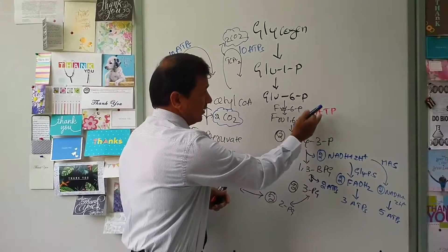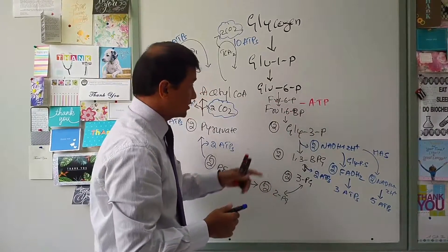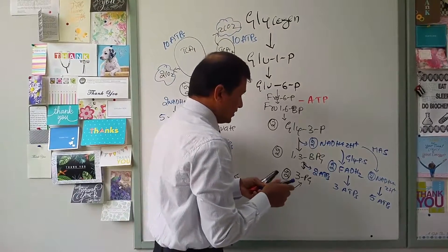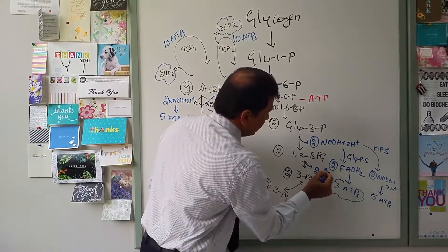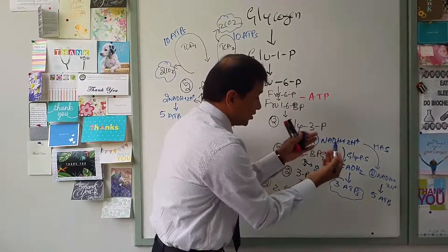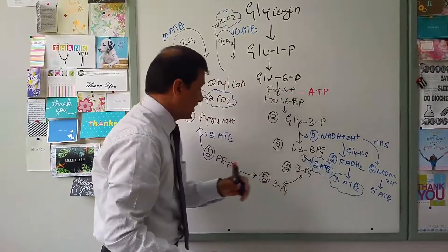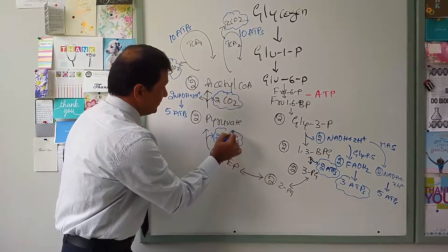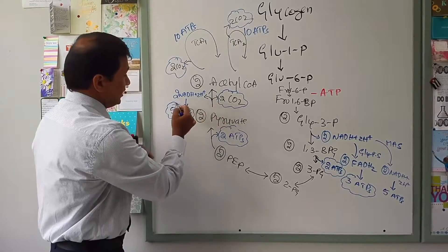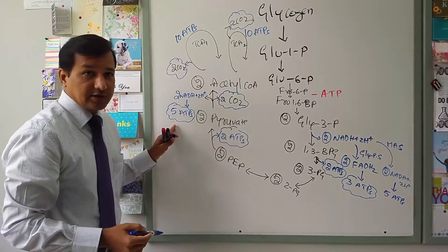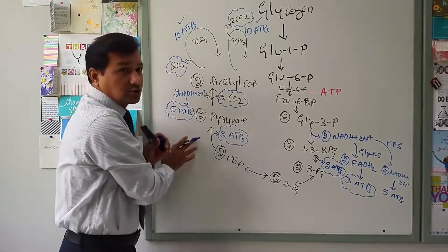Now calculating total ATPs: we consumed 1 ATP at the PFK1 step (no ATP consumed converting glycogen to glucose-1-phosphate). We produce 3 ATPs from 2 FADH₂ via the glycerol phosphate shuttle, 2 ATPs from phosphoglycerate kinase, 2 ATPs from pyruvate kinase — that's 7 ATPs from glycolysis substrate steps — plus 5 ATPs from the two mitochondrial NADH, giving 12 ATPs from glycolysis-related steps, then 20 ATPs from the two TCA cycles, totaling 32 ATPs before subtracting the consumed ATP.